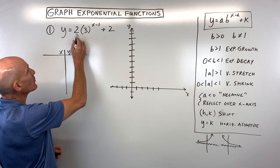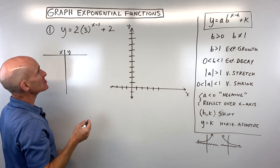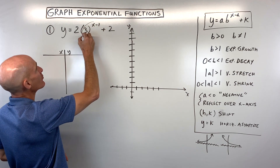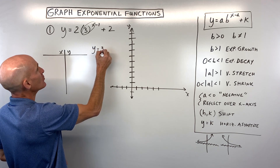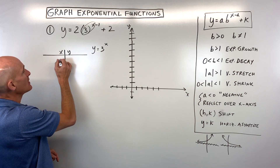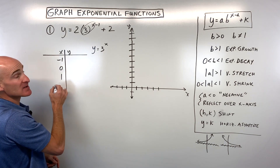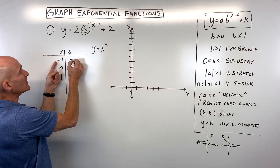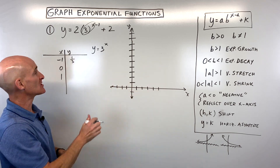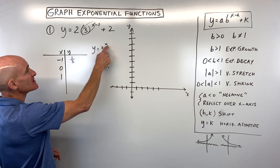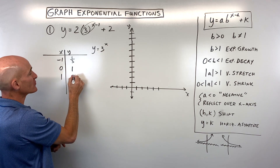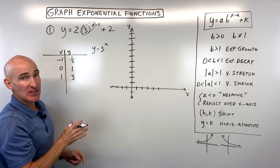Let's take a look at the first example: y equals 2 times 3 to the x minus 1 plus 2. Let's start by focusing on the parent function, just y equals 3 to the x power. Let's make a table using easy small numbers: negative 1, 0, and 1. 3 to the negative 1 is 1 third — a negative exponent means you take the reciprocal. 3 to the 0 is 1, because anything to the 0 power is always 1. And 3 to the first power is 3, because anything to the first power is itself.